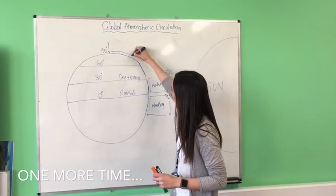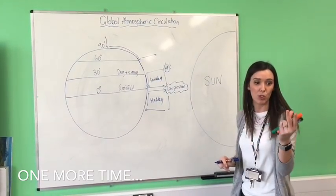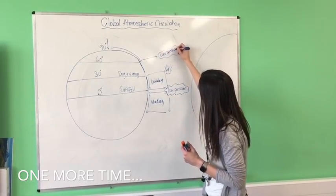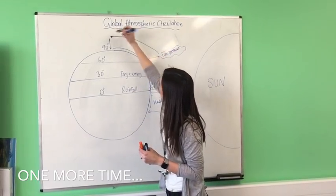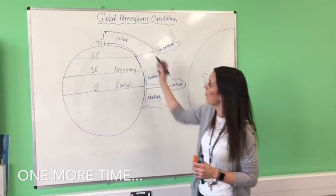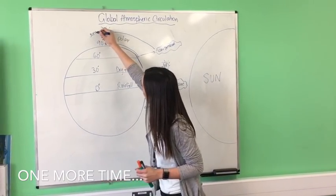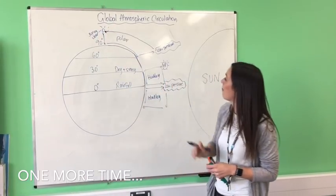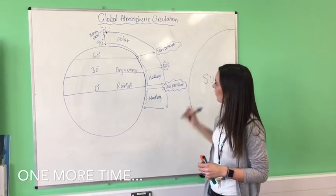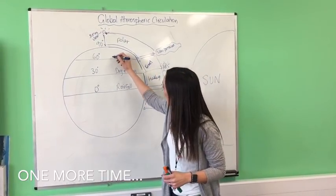The same process happens at the poles: cooler air sinks and travels to 60 degrees to warm up. As it warms it rises, cools, condenses, forms cumulus clouds - four C's again - creating low pressure and rain. The air then travels back to the poles where it sinks, creating high pressure - really sunny and clear conditions despite being very cold. This is the polar cell. The Ferrel cell is simply driven by the other two and goes in the opposite direction.